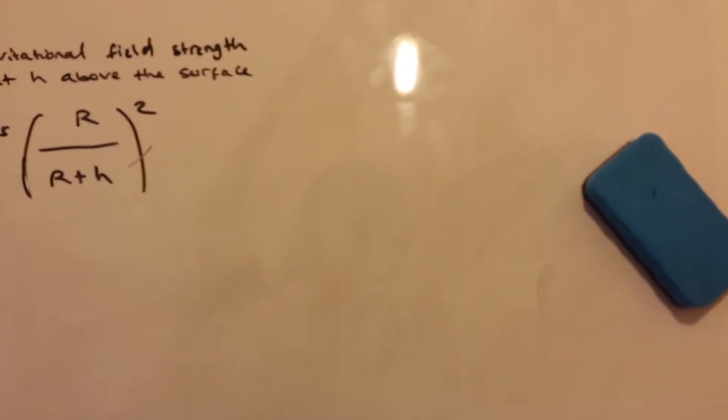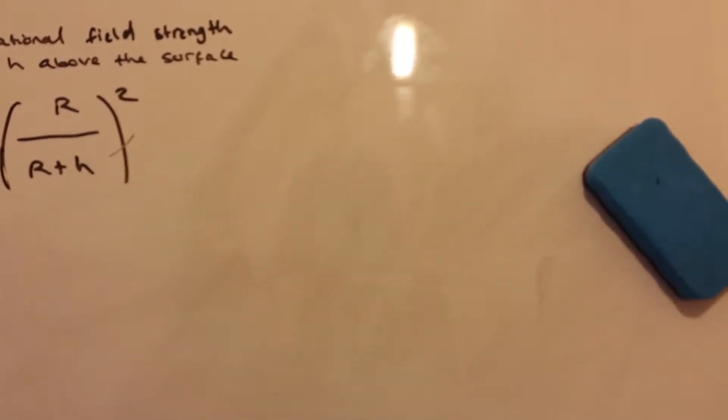So gravitational field strength at a point is the force per unit mass exerted on a mass placed at that point. In other words, gravitational field strength is the force experienced by a mass of 1 kg in that gravitational field.